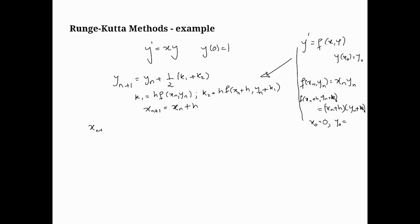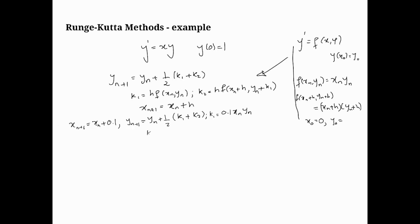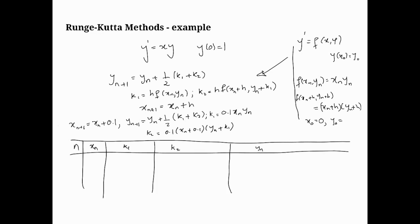So our formula for this particular problem is going to be xn plus 1 is equal to xn plus 0.1. Yn plus 1 is as it is. There's two elements that we need to calculate in that, and that's k1 and k2. K1 will be 0.1 times xn and yn. And k2 will be 0.1 into xn plus 0.1 into yn plus k1. So those are the formulas that we're going to be using, and now we're going to start calculating.